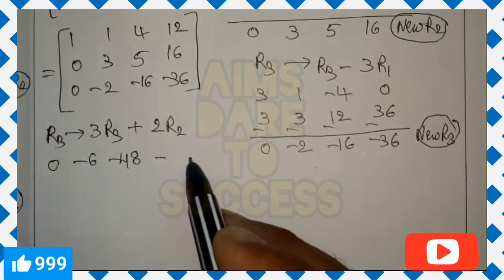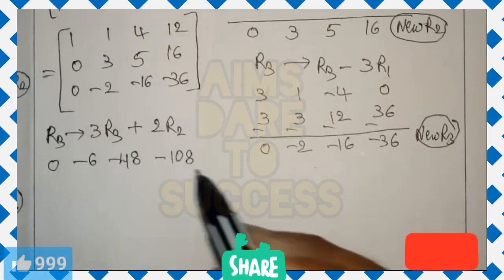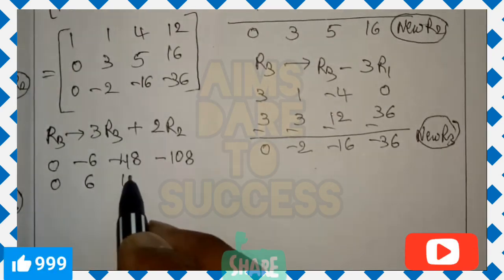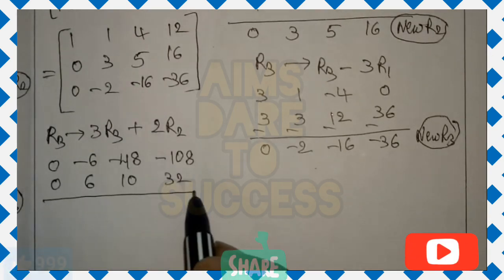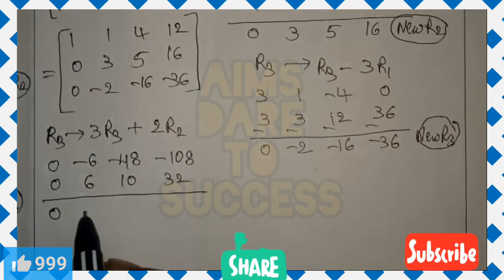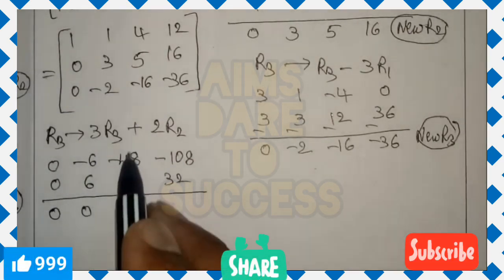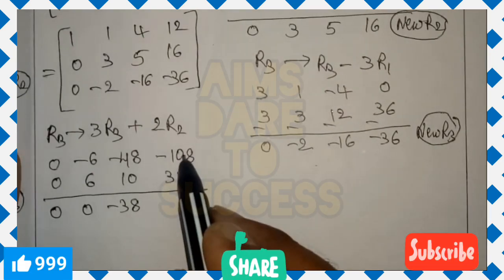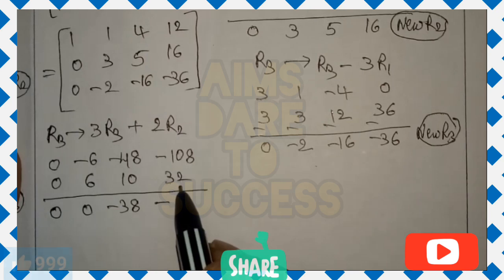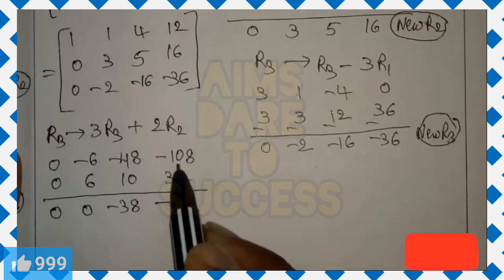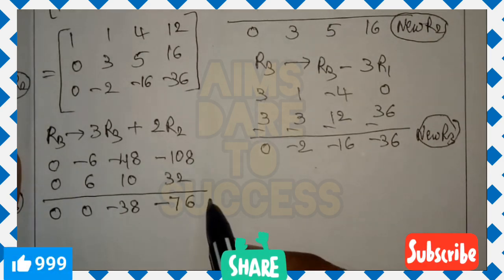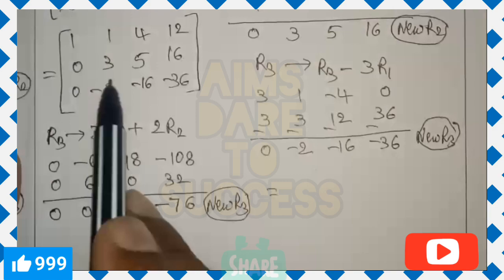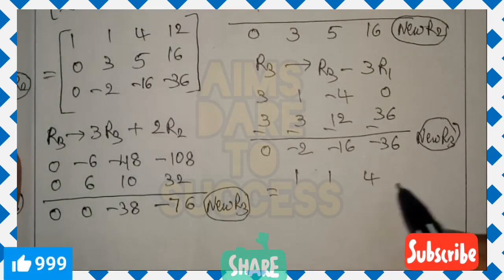Computing 2 times R2: 2×0=0, 2×3=6, 2×5=10, 2×16=32. Adding the two rows: 0+0=0, -6+6=0, -48+10=-38, -108+32=-76. New R3 is (0, 0, -38, -76). R1 and R2 remain: (1, 1, 4, 12) and (0, 3, 5, 16).